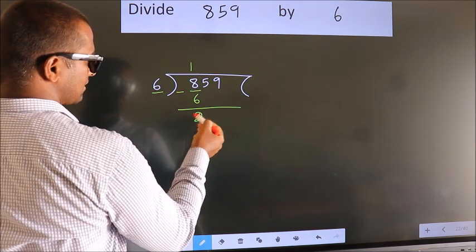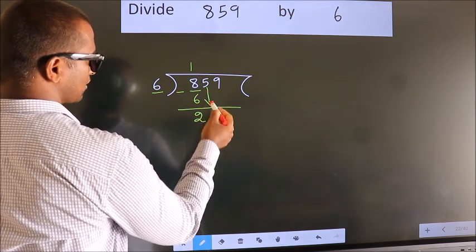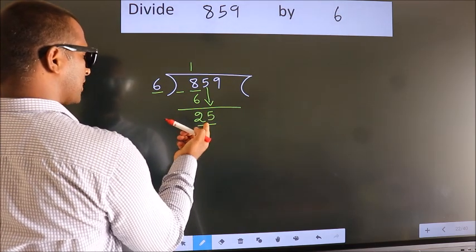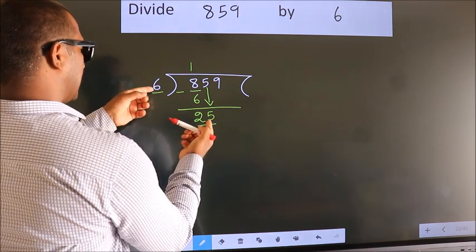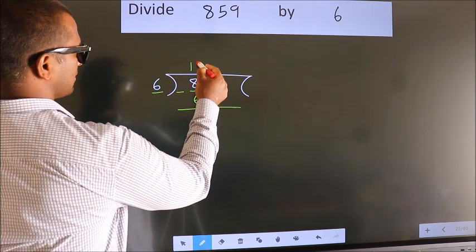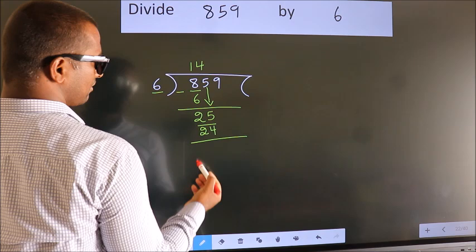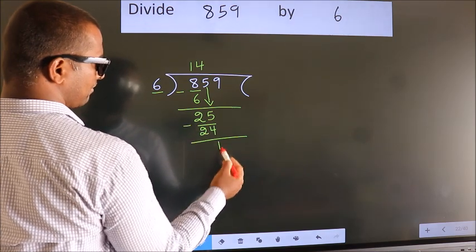After this, bring down the beside number. 5 down, so 25. A number close to 25 in the 6 table is 6 fours are 24. Now we subtract. We get 1.